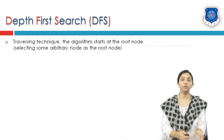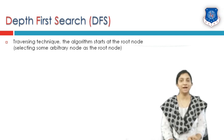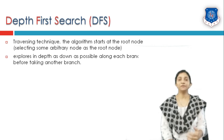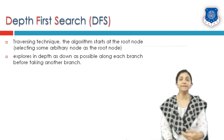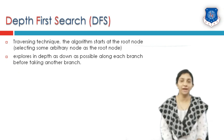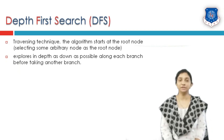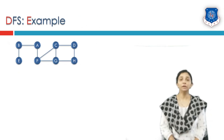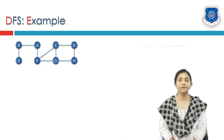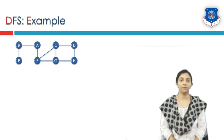In this technique, the algorithm starts from some arbitrarily selected node labeled as the root node, and it explores nodes or vertices in depth — as deep as possible — along each branch before exploring another branch. To understand depth-first search traversal of a graph, we will consider the example shown on screen.